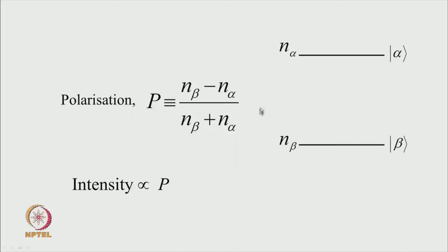We can define a quantity called polarization as (n_beta − n_alpha) divided by the total number of spins, where n_alpha and n_beta are the populations of the alpha and beta levels. The EPR signal intensity depends on the population difference — if the two are equal, we get no signal. So intensity is proportional to polarization: when polarization is positive we get net absorptive signal, and when polarization is negative we get emissive signal.